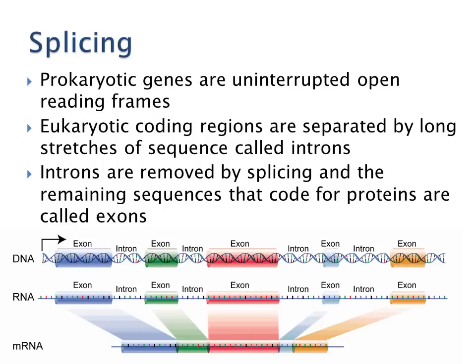We also have splicing. In prokaryotes, genes are uninterrupted open reading frames. However, in eukaryotes, coding regions called exons are separated by stretches of sequence called introns. When messenger RNA is made, those introns are spliced out so that we only end up with our exons — our coding sequences.